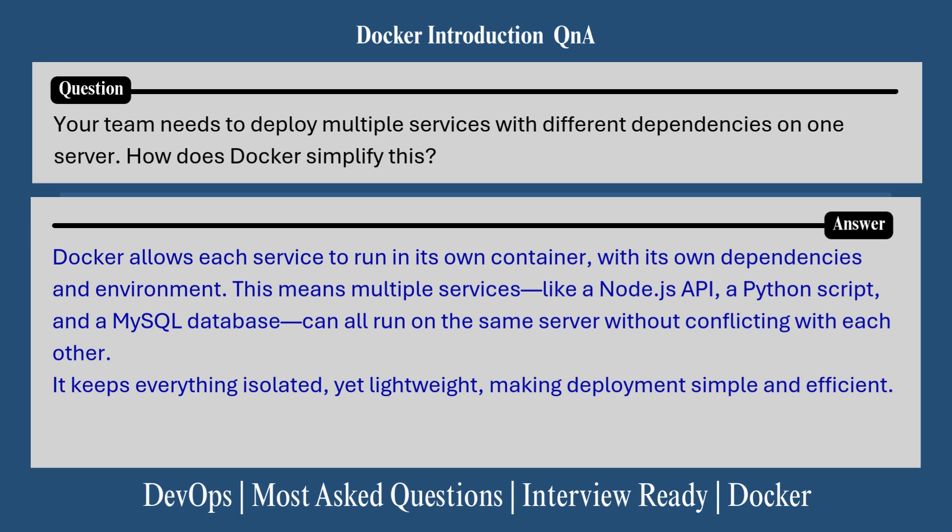Next interview question: your team needs to deploy multiple services with different dependencies on one server. How does Docker simplify this? Here's how you can answer: Docker allows each service to run in its own container with its own dependencies and environment. This means multiple services like a Node.js API, a Python script, and a MySQL database can all run on the same server without conflicting with each other. It keeps everything isolated yet lightweight, making deployment simple and efficient.